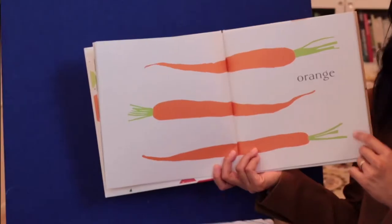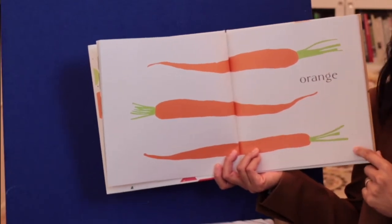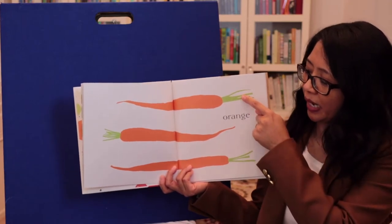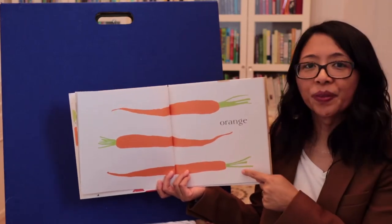Orange. You guessed it. Carrots. How many carrots do you see? Let's count. One, two, three.